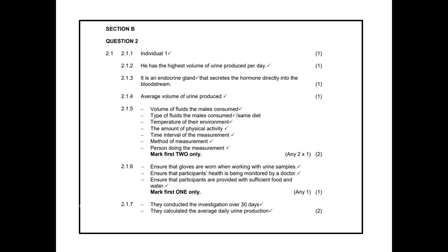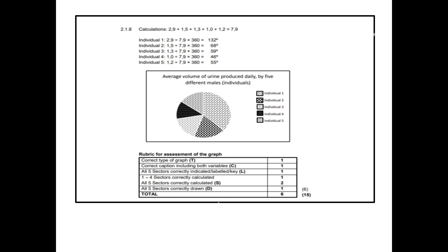Question 2.1.8 asked us to draw the pie chart. The pie chart is very important — and for any graph you get in your exam, you are only going to be given six marks. The key that examiners use for graphs: T for type of graph — it must be a pie graph; C for caption, which means heading, and you must have both variables — what you're measuring (average volume of urine produced daily) and what you're controlling (the five different males/individuals). Then your labels, calculations, and sectors must be labeled. You get five marks if all sectors are calculated correctly — if you get one wrong you'll only get one mark.